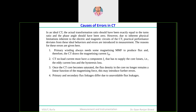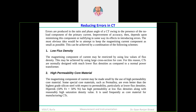The CT draws a magnetizing current IM — that is reason number one. Number two, the CT no-load current must have a component of core current to supply the core loss — that is the eddy current loss and hysteresis loss. Once the CT core becomes saturated, the flux density no longer remains a linear function of magnetizing force — it becomes non-linear, varying parabolically as a second-order non-linearity. Additionally, the primary and secondary flux linkages differ due to unavoidable leakage flux linkages.